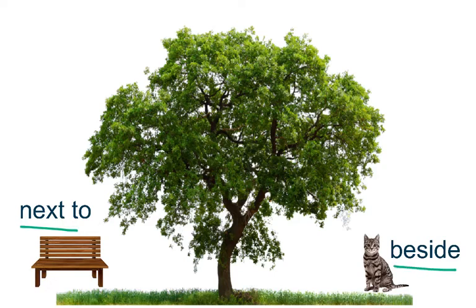If we look at the tree here, we have two objects — a cat and a bench. The position words you can use for these objects are next to and beside. We could say the bench is next to the tree, and the cat is beside the tree. Both next to and beside mean the same thing. You can use both words to mean the same thing.